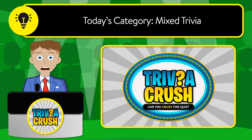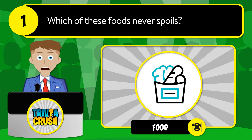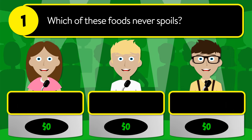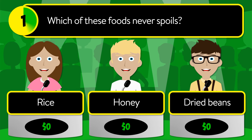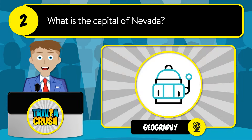Welcome to Trivia Crush. Today's category is mixed trivia. Let's get started. Question number one: which of these foods never spoils? Is it rice, honey, or dried beans? The correct answer is honey.